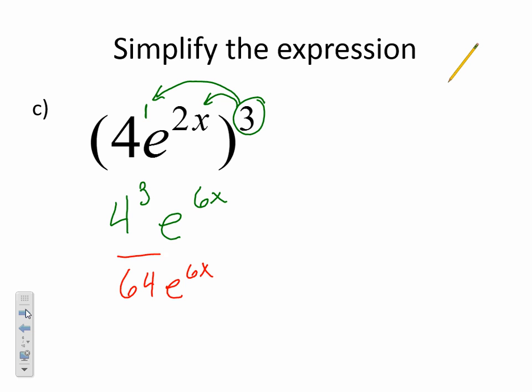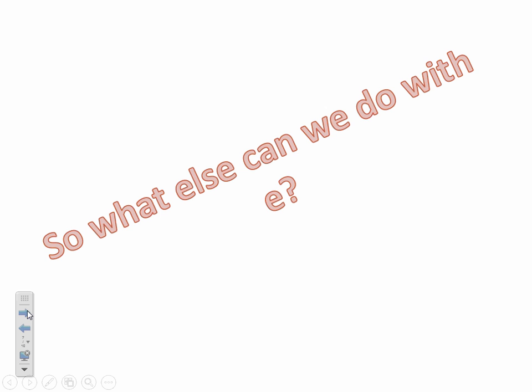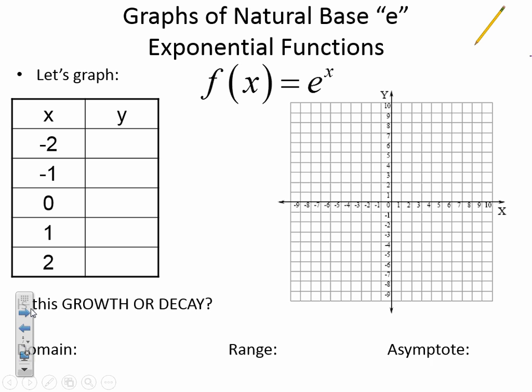And that is my simplified expression. Now, I'm sure you're asking yourself, what else can I do with the number E? Well, next thing we're going to do with E is we are going to graph using our natural base E. Make sure we have this down. Our equation is f of x equals E to the X. If you don't like f of x, you can rewrite it as y equals E to the X power. Just like we have been doing, we're going to use our base of negative 2 to 2. And we're going to plug these into our calculator. This is where you need to know where E is at on your calculator. So we're going to have E to the negative 2, and that is approximately 0.14.